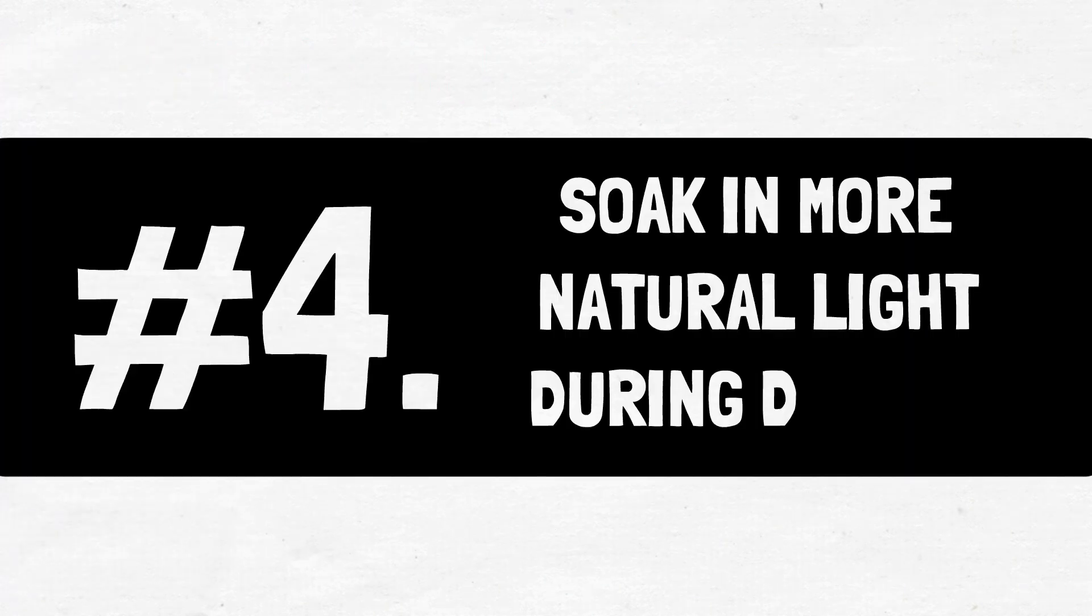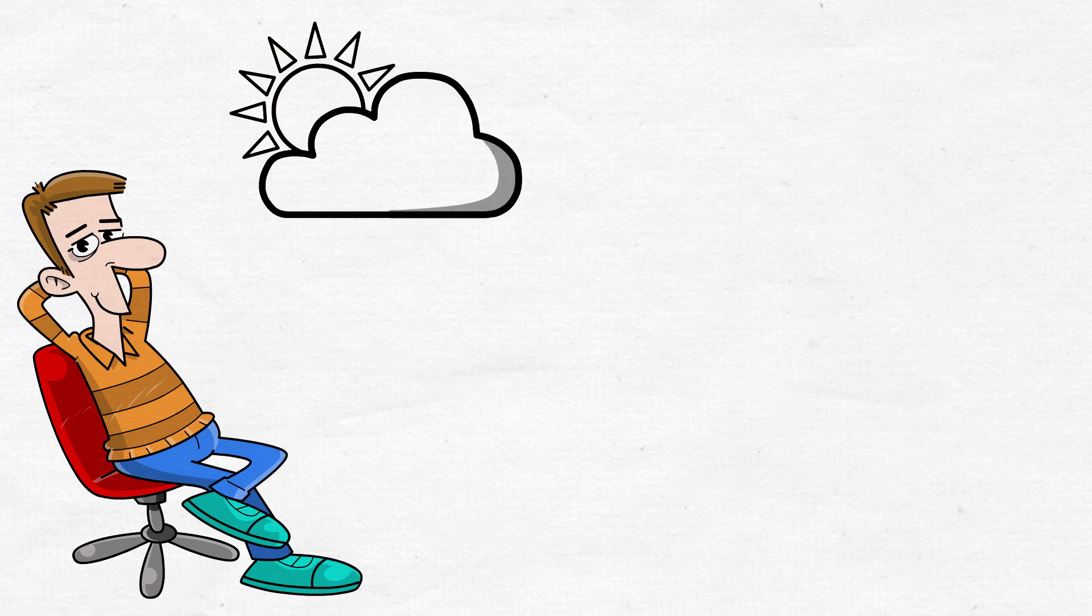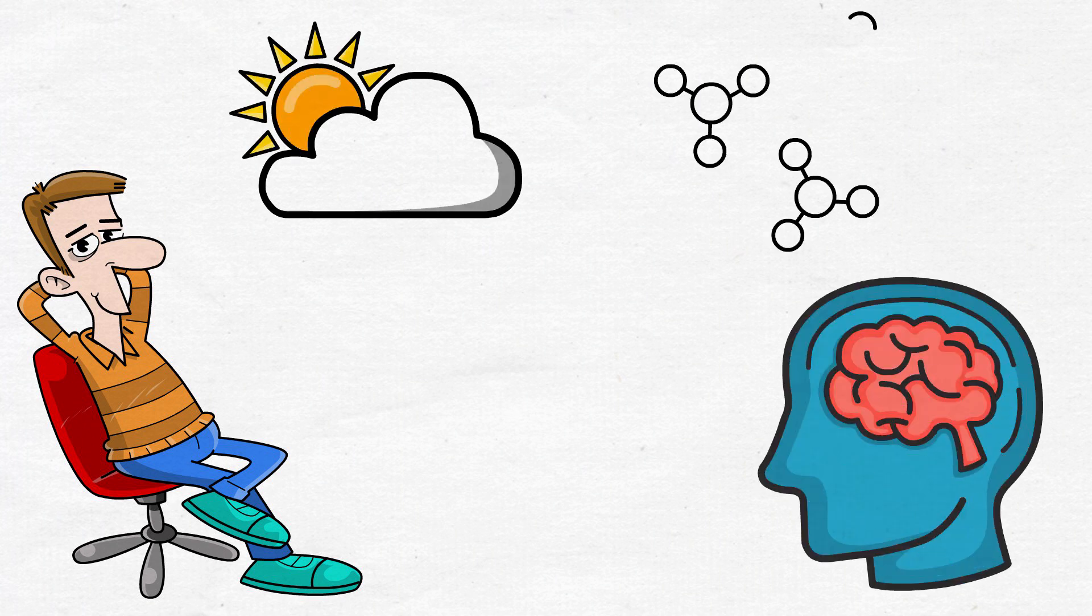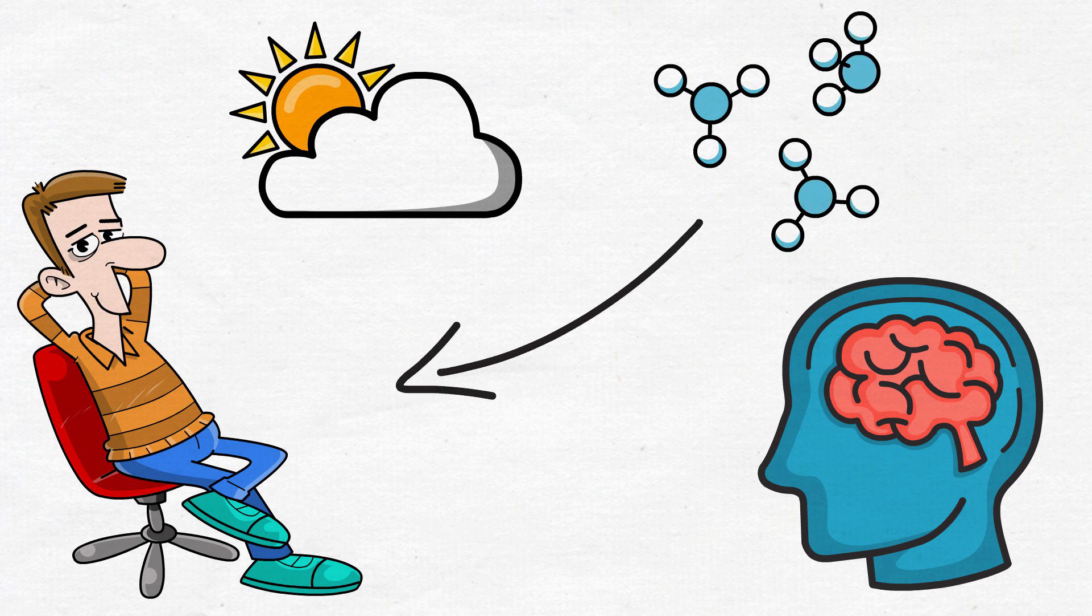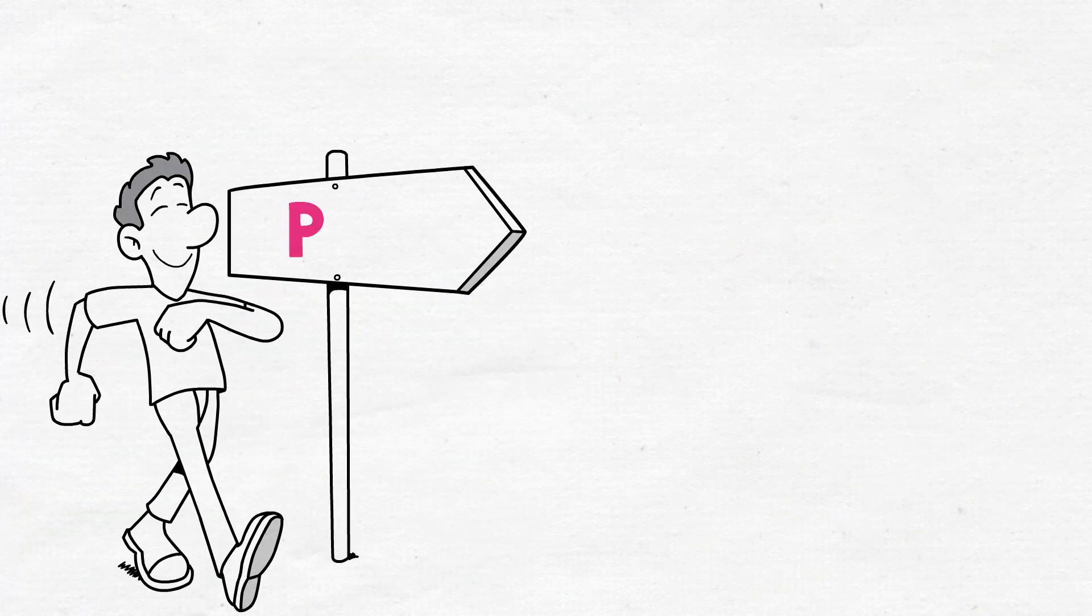4. Soak in more natural light during daytime. Your biological clock can be appropriately set by exposure to natural light. In turn, this enhances mental clarity and brain function because it releases endorphins, which are brain chemicals that make us feel happier and more at ease. Take an early morning stroll outside to receive more natural light.